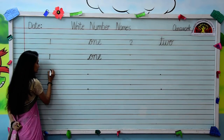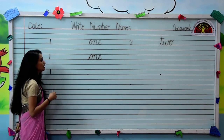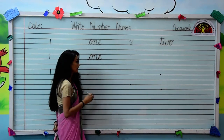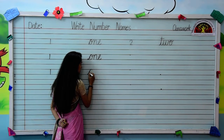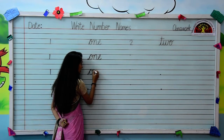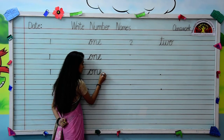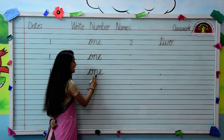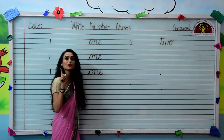Let's write it again. Firstly, we will write number 1 — make a standing line. Now we will write the spelling. Put your pencil on the dot. Write O, small cursive letter O. Then, joining with letter O, write N. Joining with letter N, write E. This will make O-N-E.